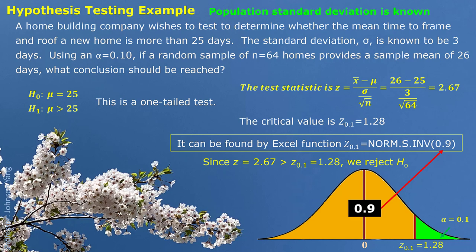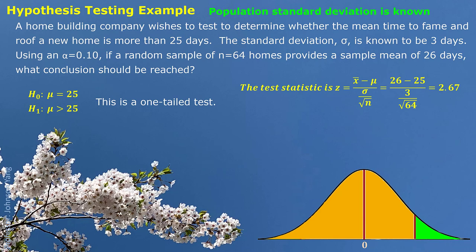We reject H0, meaning we do not consider the average time to be 25 days for framing and roofing a new home. Using the p-value approach for the same question, based on test statistic 2.67, we calculate how much chance the standardized sample mean is bigger than 2.67 — that is, the area on the right-side tail. This gives us the answer 0.0038, which is our p-value.